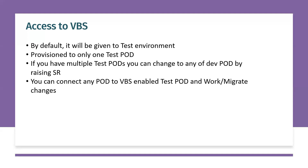By default, Visual Builder Studio is available for the test environment. If you want to move the VBS instance to a dev1 instance, you can raise an SR to make that change. From the provisioned VBCS instance, you can then connect to any instance — production, test, or other dev environments — and work from the same Visual Builder.